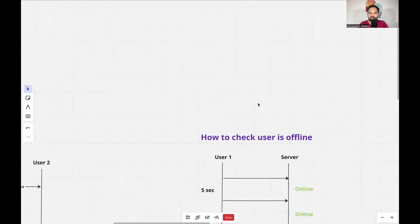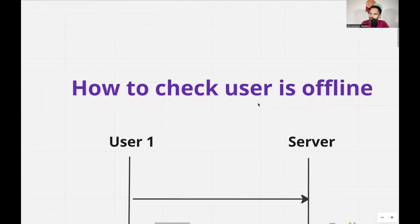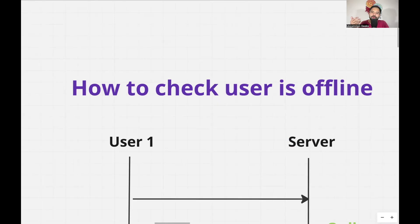The next important problem is how to check whether a particular user is online or not. This is a very challenging problem. For example, I've opened my mobile application and made a GET request to fetch messages — the server can see I'm online because I made a recent request. But after that, I may just be scrolling and reading without making any API calls, so the backend may not know whether I'm online. Or I could have opened my app, put it in the background, and opened another app — technically I'm still online. How does the backend really know whether a user is online or not?